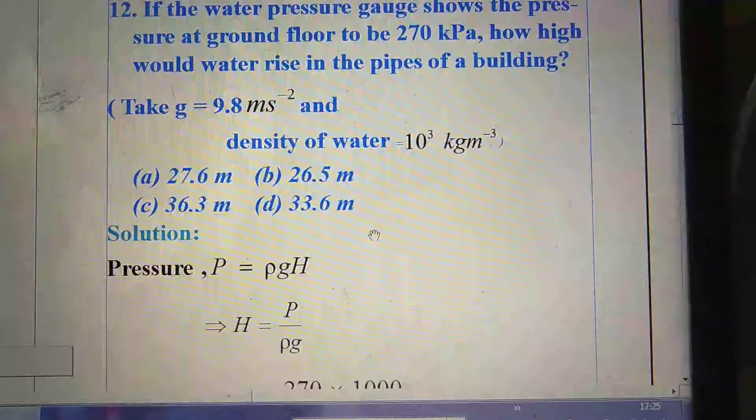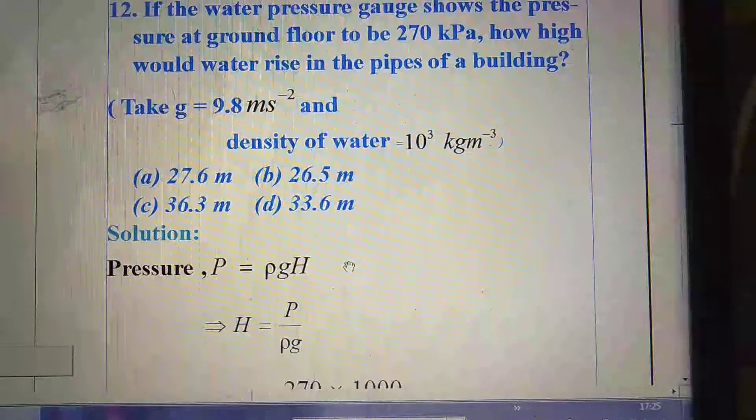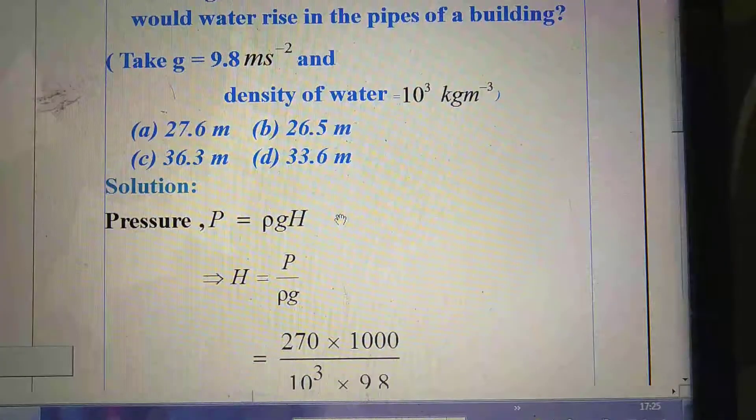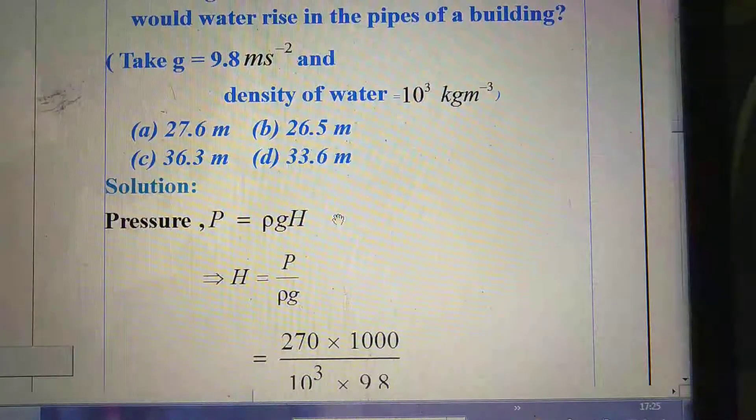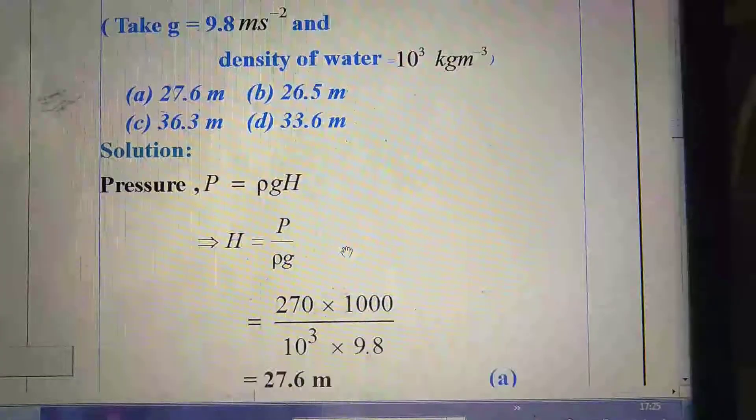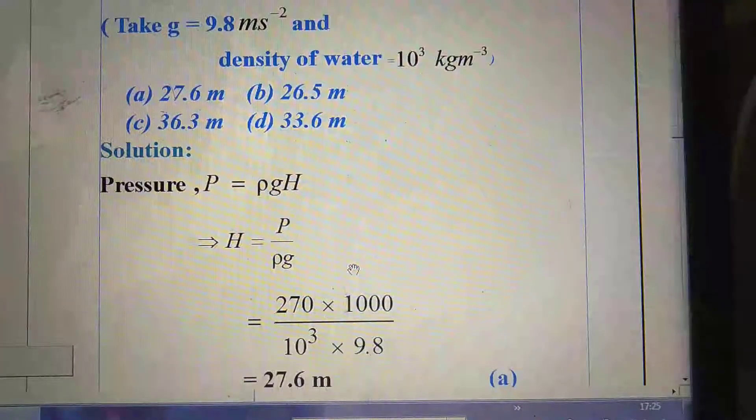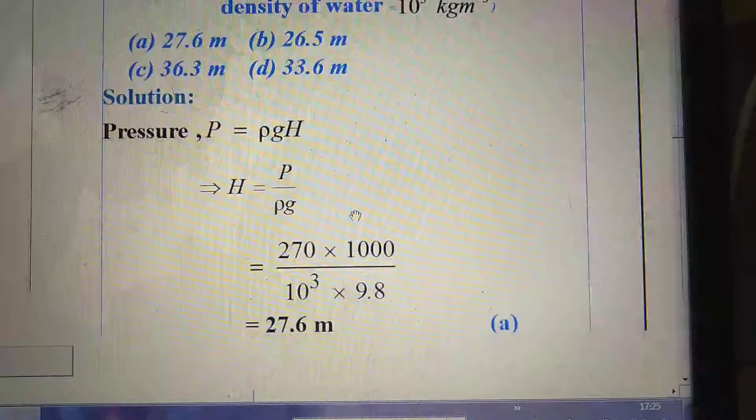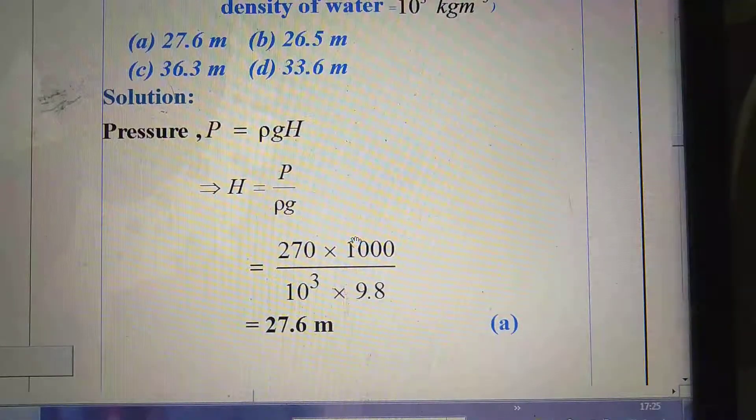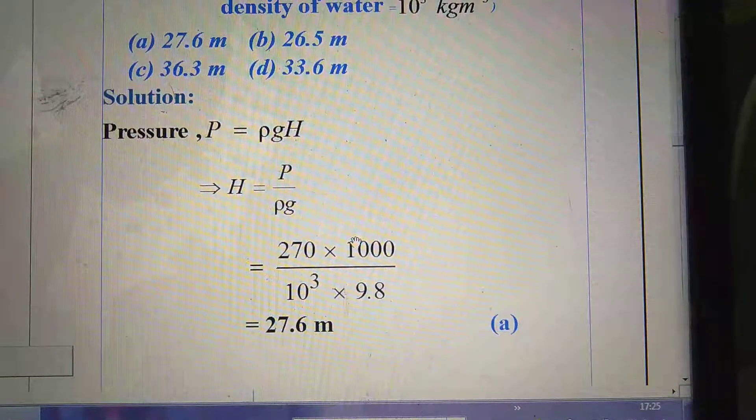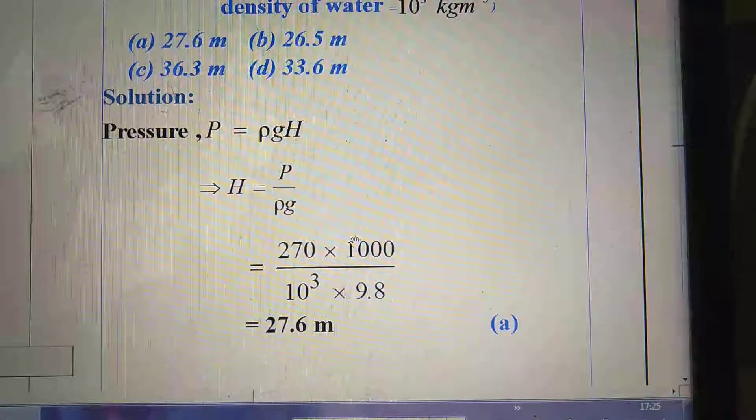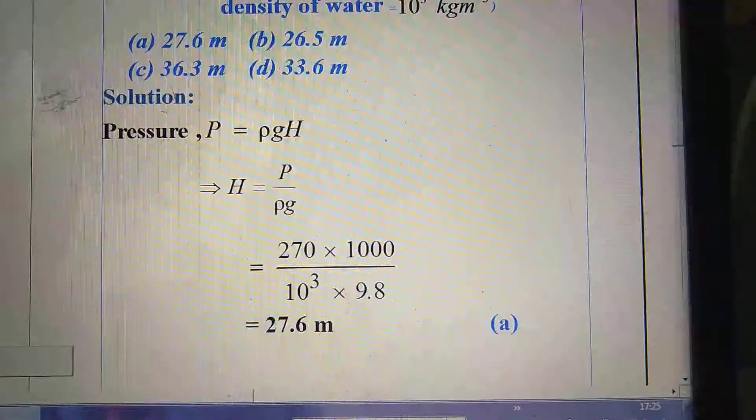So for that one we have to know the formula of pressure. Pressure is P = ρgh. Rho is the density, G is the acceleration due to gravity and h is the height. Then h = P / ρg. Insert the value of P, rho and G. After calculation, how much you got? 27.6 meter. So right option is A, that is 27.6 meter.